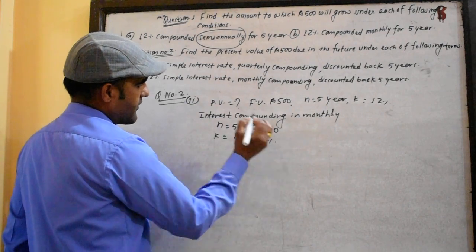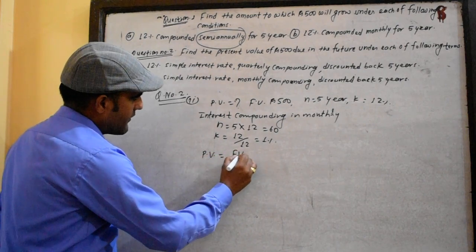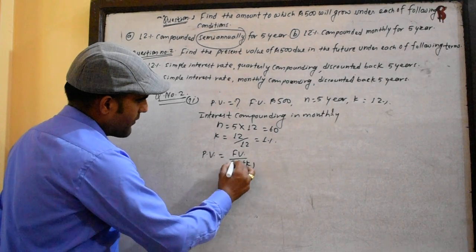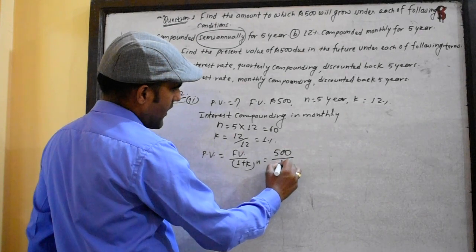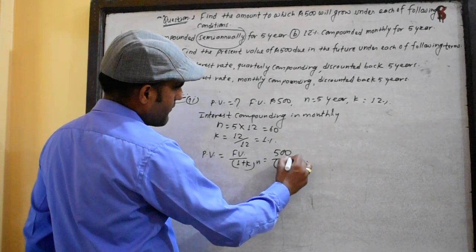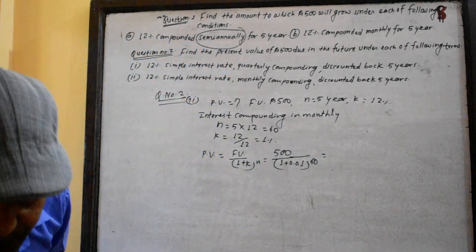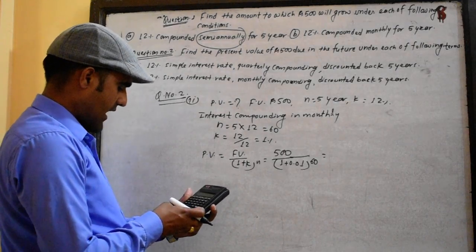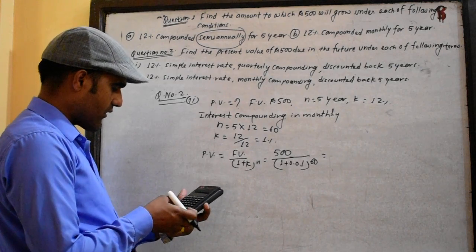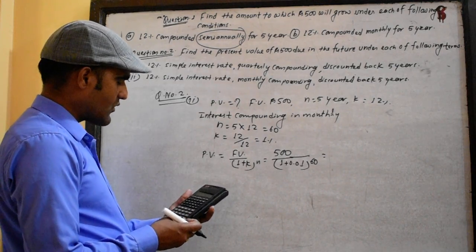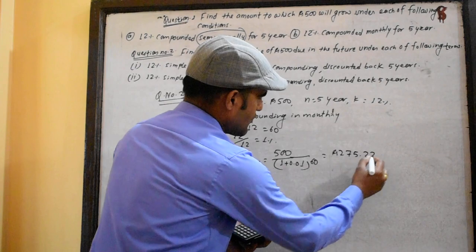The present value formula is PV equals FV divided by (1 plus k) to the power n: 500 divided by (1.01) to the power 60, giving approximately 275.22.